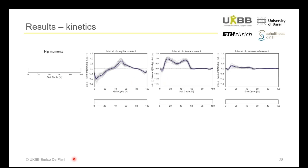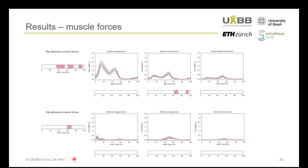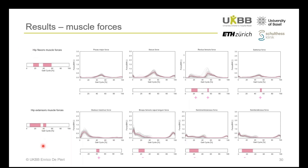When looking at kinetics, we did not find any correlation between femoral torsion and the net hip internal moments. For muscle forces, we found a correlation between torsion and the forces produced by the hip abductor compartment as a whole during late stance and swing phase — specifically, the gluteus minimus was negatively correlated with femoral torsion during swing phase. We also found correlations between femoral torsion and all other hip muscle compartments, including hip adductors, hip flexors, and hip extensors.